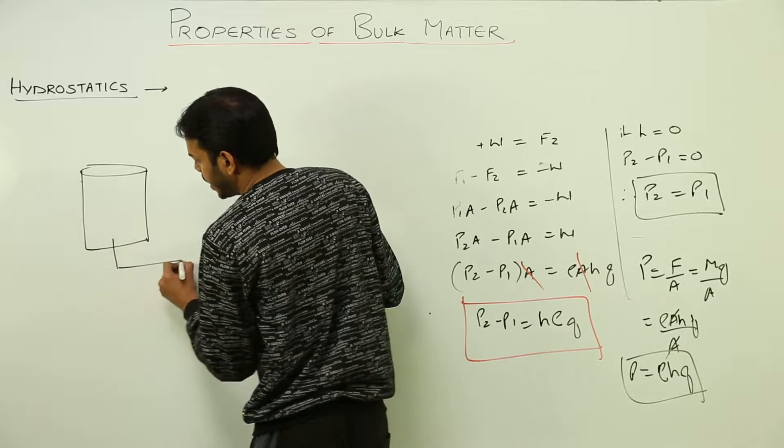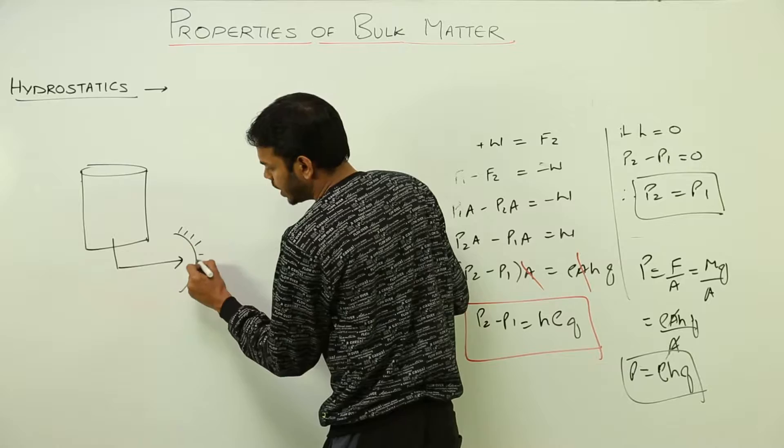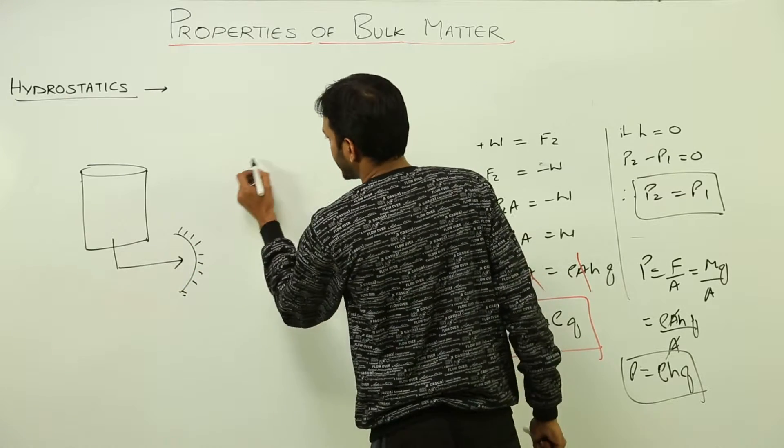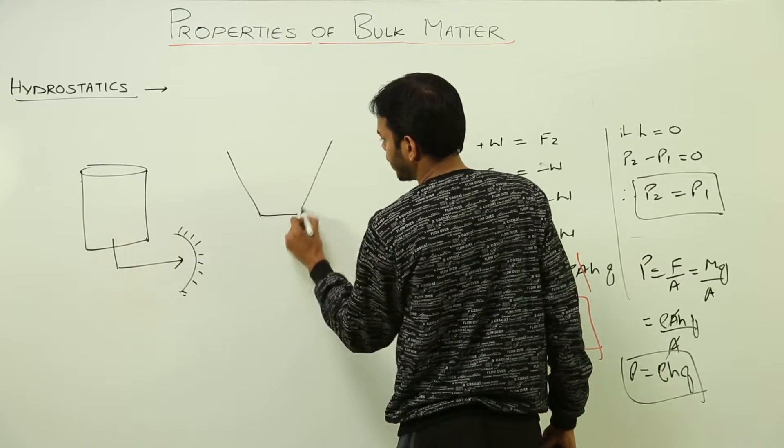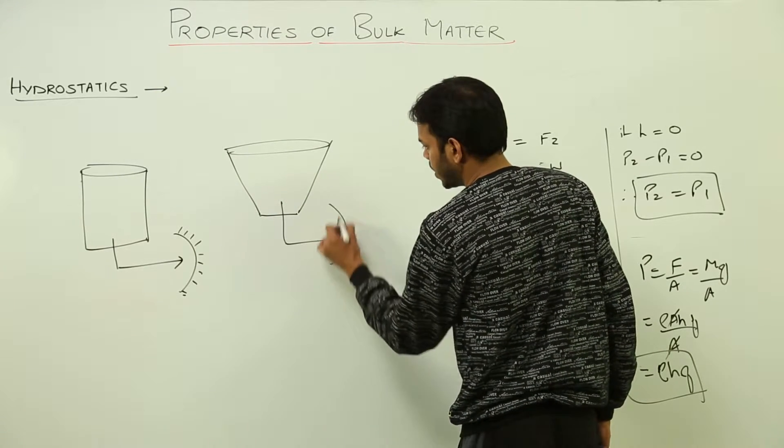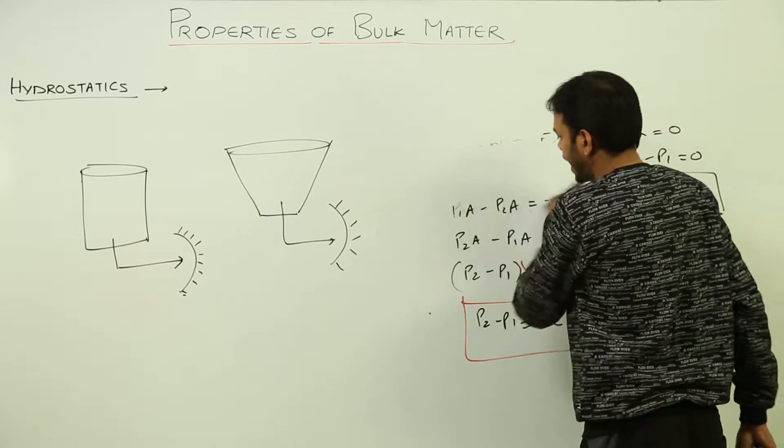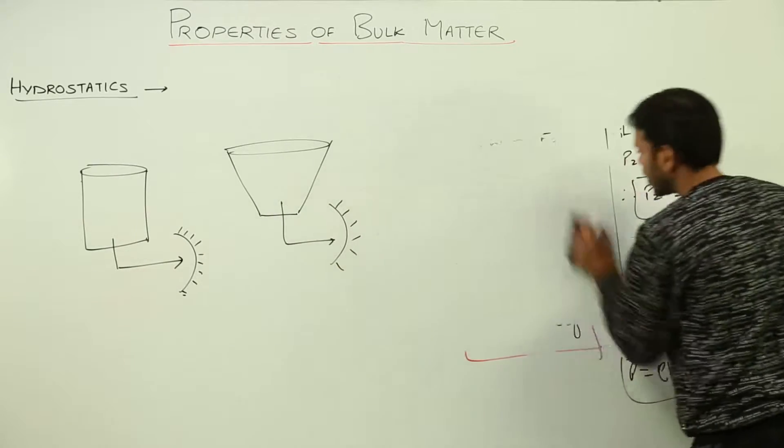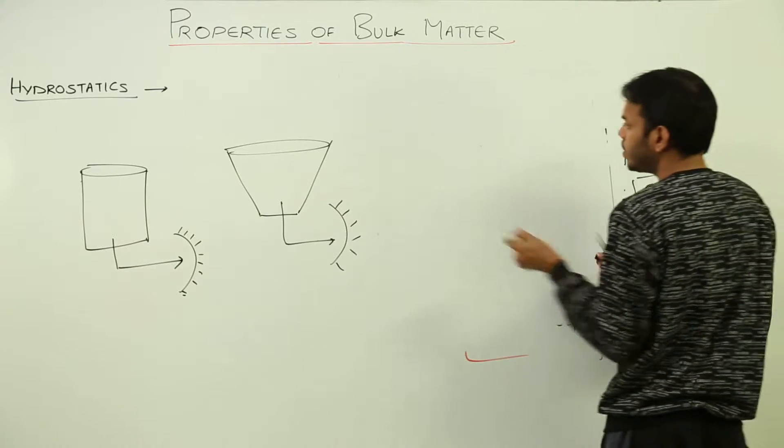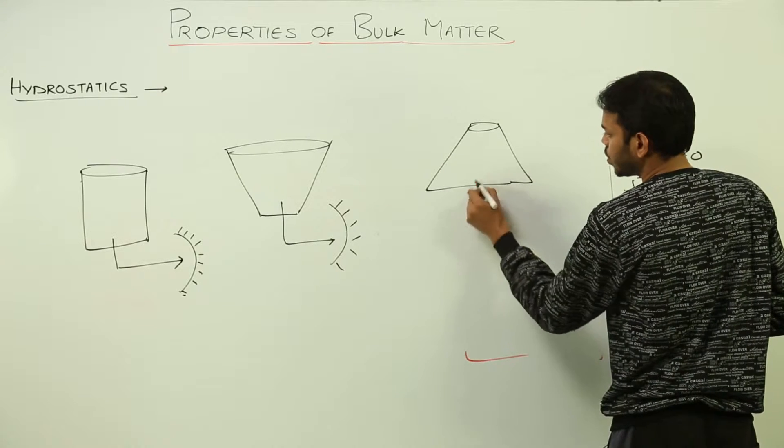Right, suppose this vessel is now in this shape, and lastly the vessel is in narrower shape, this is how.